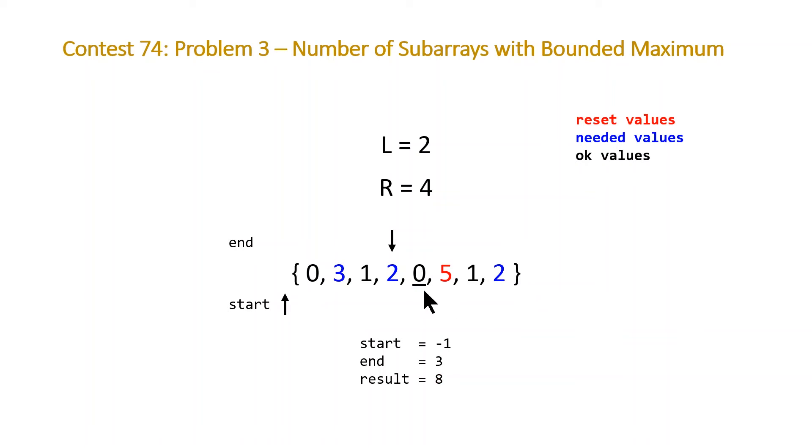We move to our next value, which is an okay value. We're just going to do a plus equals like we did before, because at this point we're just extending those subarrays that we just calculated at our last element. This will go from 8 to 12.